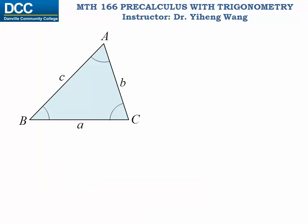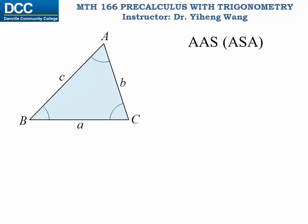That leaves us with four situations. The first situation is when the three given parameters are angle, angle, and the adjacent side — known as AAS, angle angle side. Or angle, adjacent side, and angle — ASA — which can be considered the same as the previous situation, as I will explain later. The second situation is when the three parameters known are side, side, angle — known as SSA.